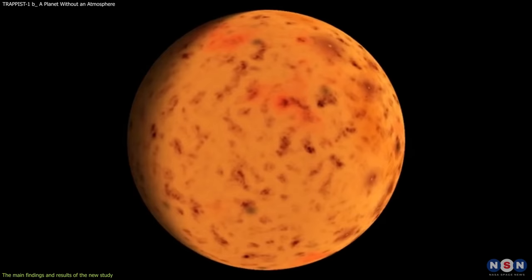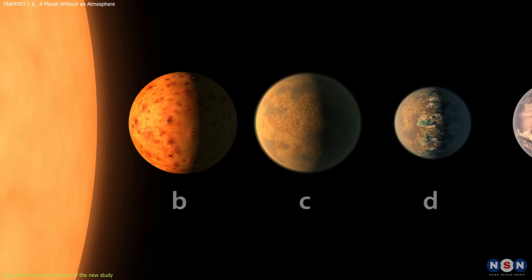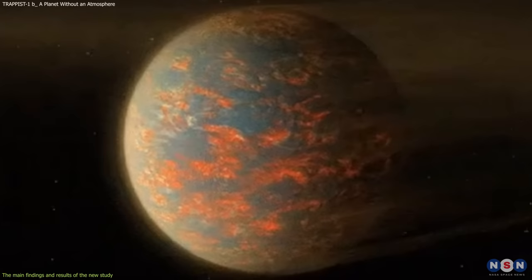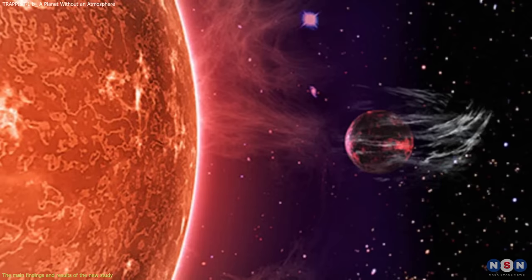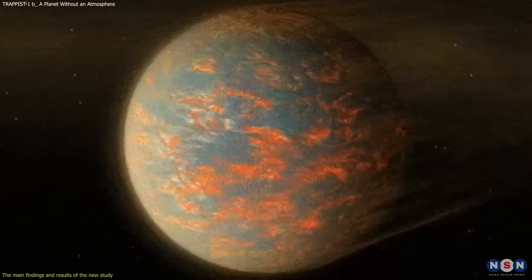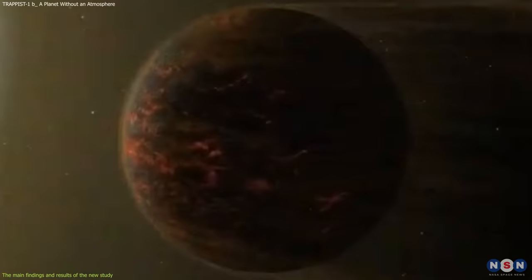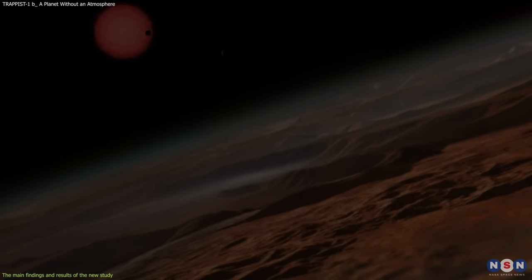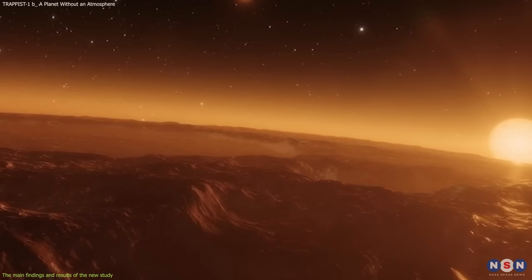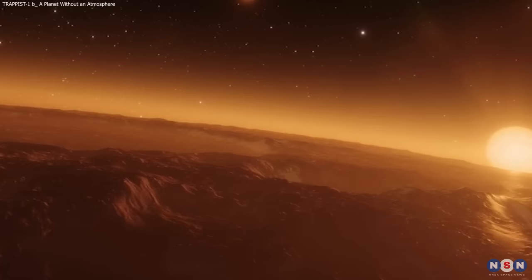They concluded that TRAPPIST-1b does not have an atmosphere because it is too close to its star and receives too much radiation from it. The star's radiation could have stripped away any primordial atmosphere that the planet may have had when it formed or prevented it from forming one in the first place. The study estimated that TRAPPIST-1b receives about 400 times more ultraviolet radiation than Earth does from the Sun, which is enough to erode any atmosphere within a few million years. This implies that TRAPPIST-1b is likely a rocky and barren world, unlike its potentially habitable siblings. They also calculated that TRAPPIST-1b has a surface temperature of about 400 degrees Celsius, which is too hot for liquid water or life to exist.